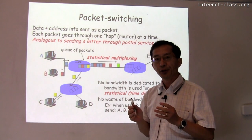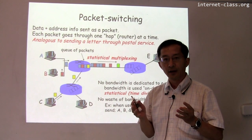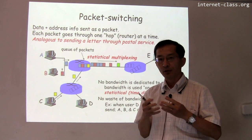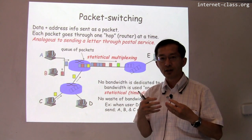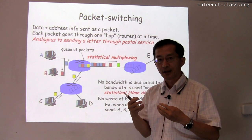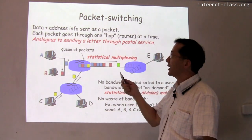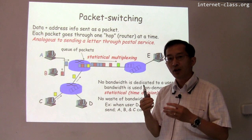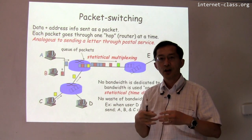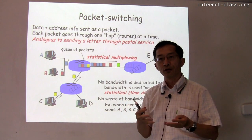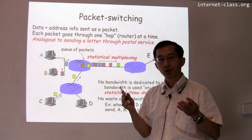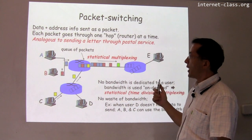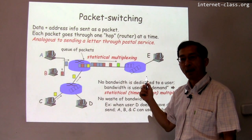In computer communication networks like today's internet, we use packet switching. In packet switching, data and address information is sent as a packet, and each packet goes through multiple hops, one hop at a time. Much like you send a letter through a postal office — it goes to a local office, then to the regional and national office, and so on.